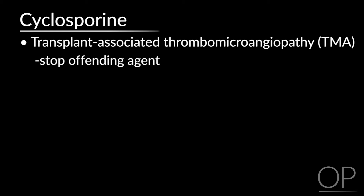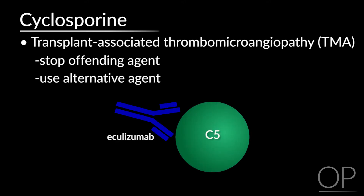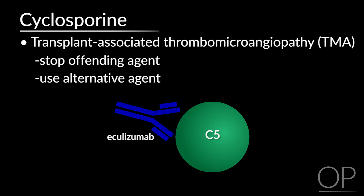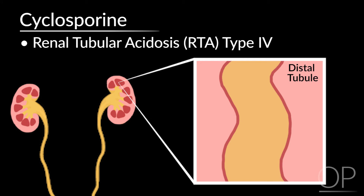Often we will switch agents from cyclosporine to another calcineurin inhibitor. There is growing evidence about the use of eculizumab, a humanized anti-C5 antibody for complement factor C5, which has been used in some situations. Another problem encountered with cyclosporine is type 4 renal tubular acidosis. Calcineurin inhibitors affect renal tubules, leading to magnesium wasting, bicarbonate losses, and other cation losses. So if a patient is well-appearing but presents with a bicarbonate in the teens, this is often due to cyclosporine rather than sepsis or other causes.